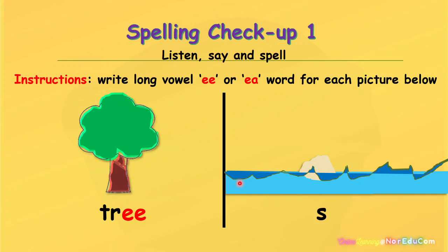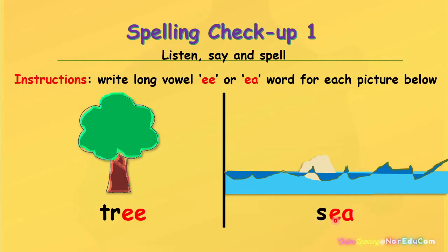Let's go to the next picture. What is this? Yes, this is the sea. How to spell sea? Which long vowels do we need to use? Is it EE or EA? Let's make the sound. S, E, A. Now repeat after me: S, E, A.